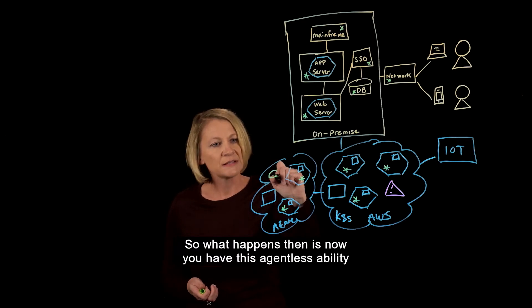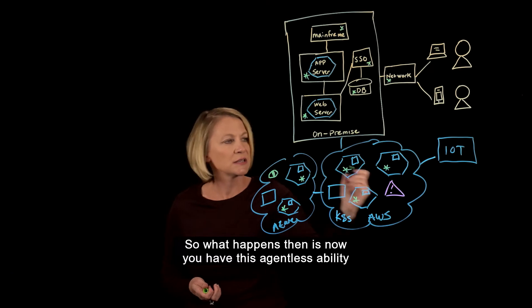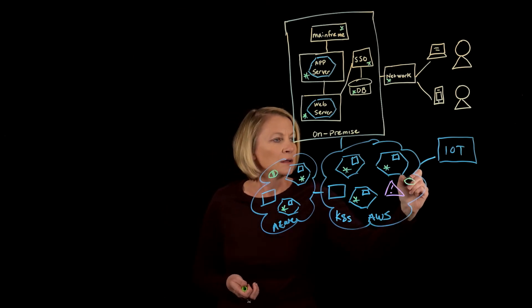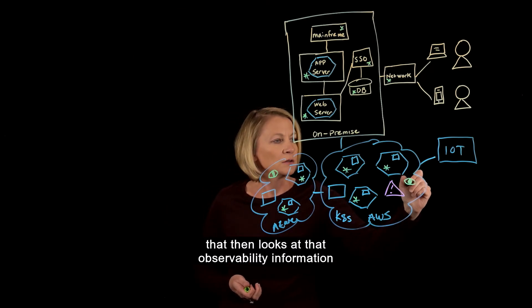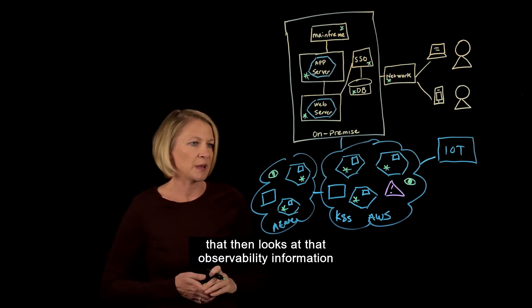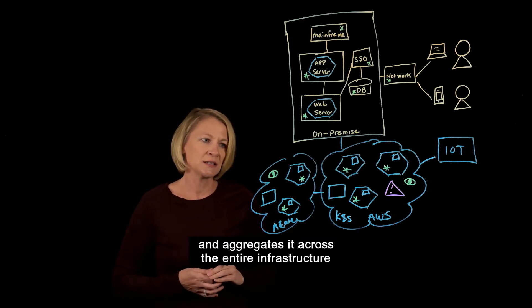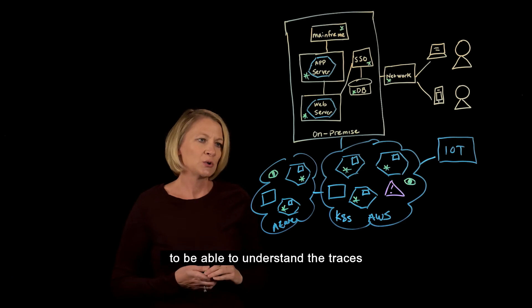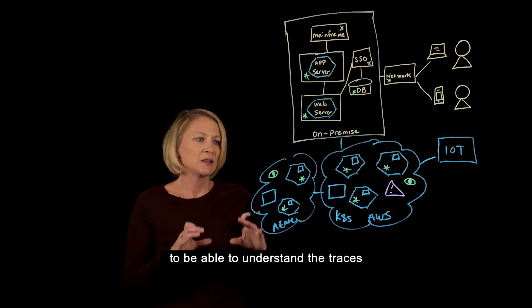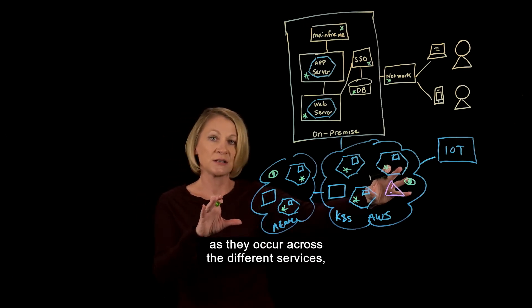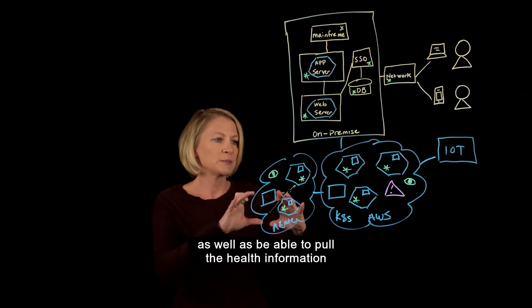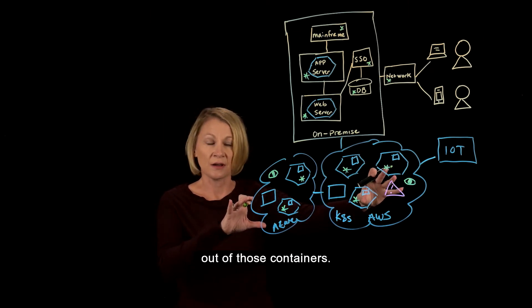So what happens then is now you have this agentless ability that looks at that observability information and aggregates it across the entire infrastructure to be able to understand the traces as they occur across the different services, as well as be able to pull the health information out of those containers.